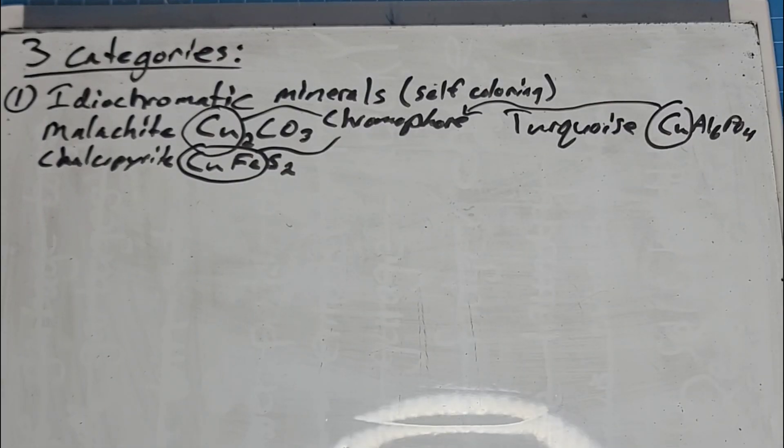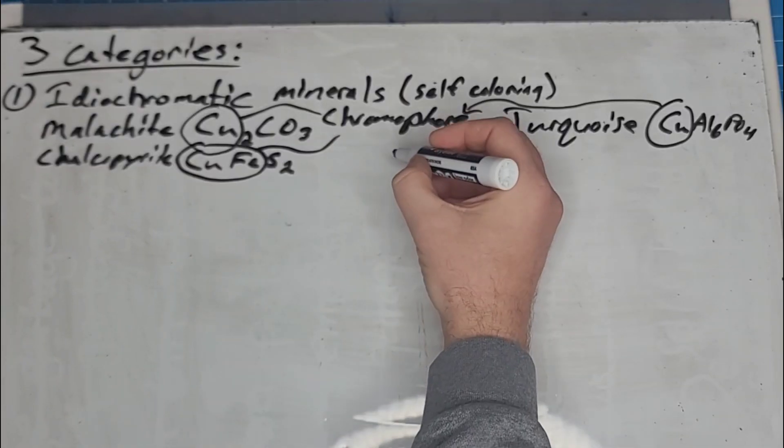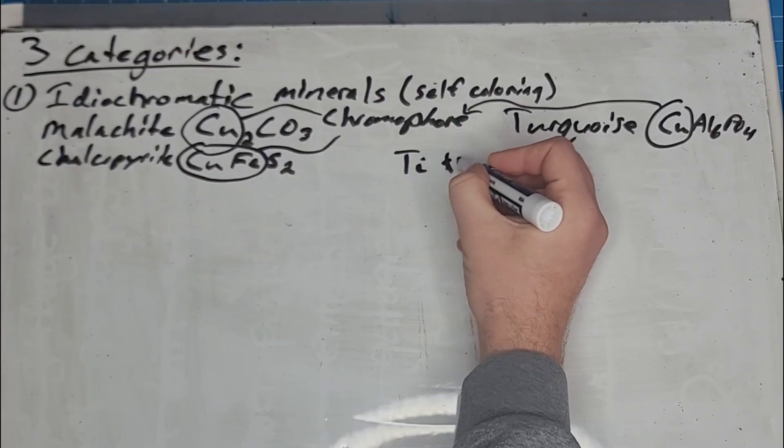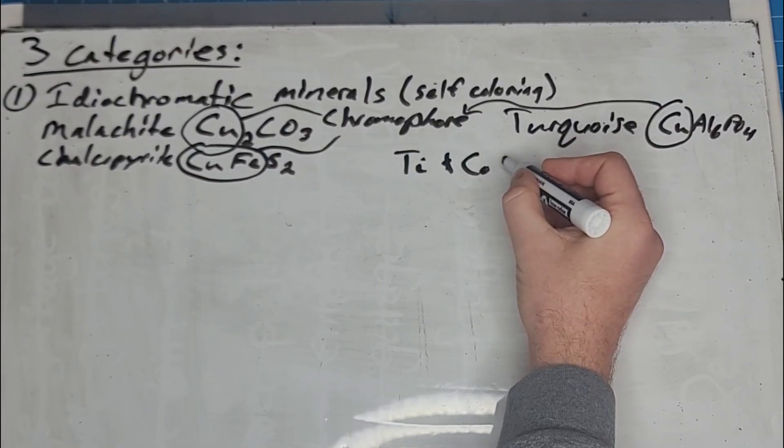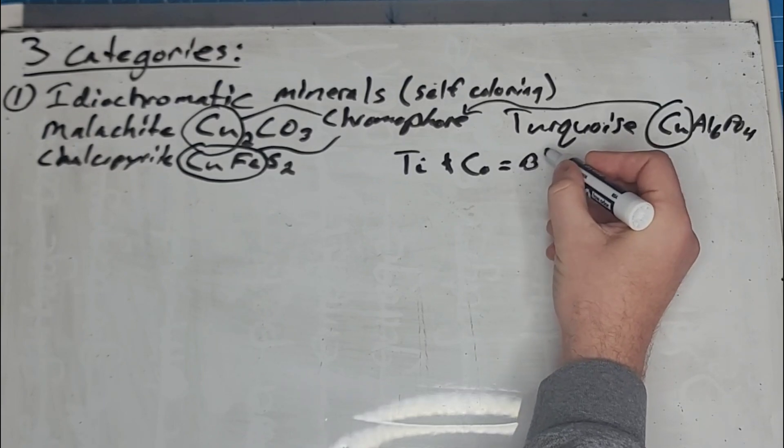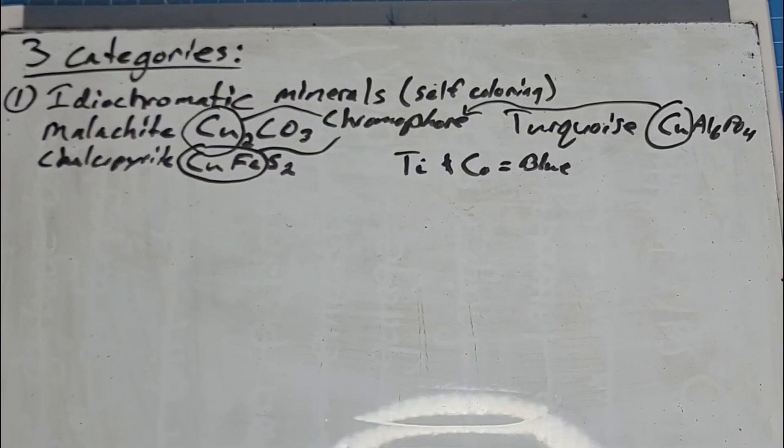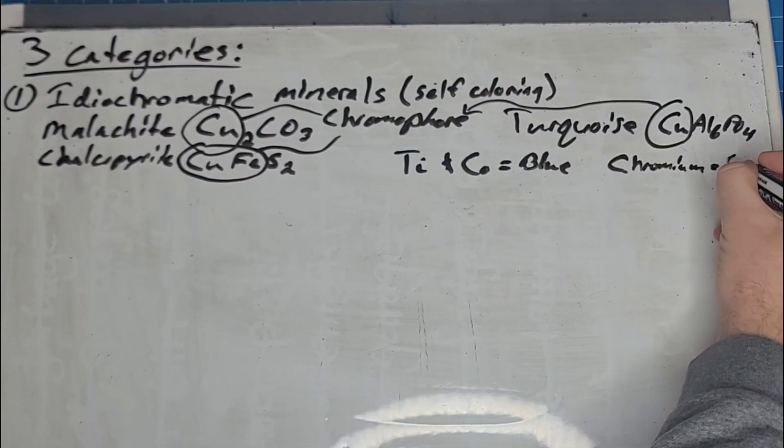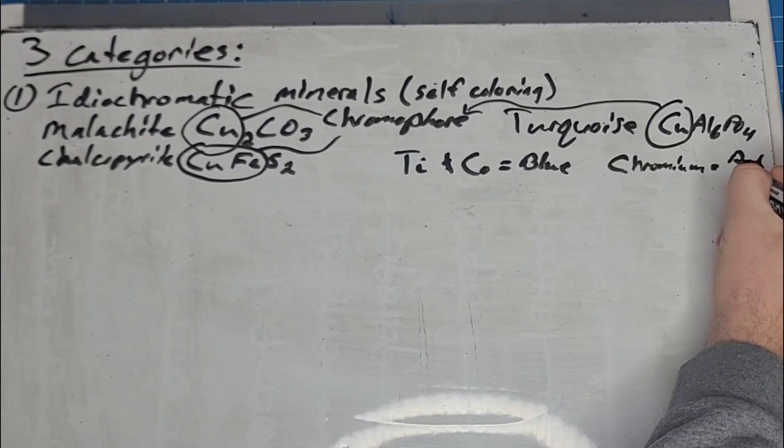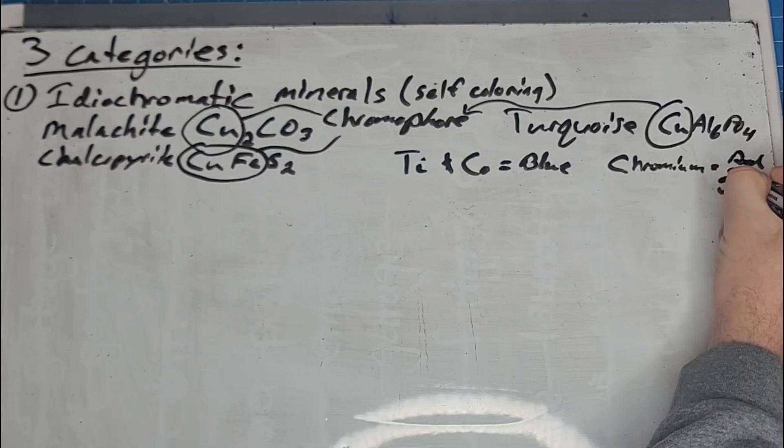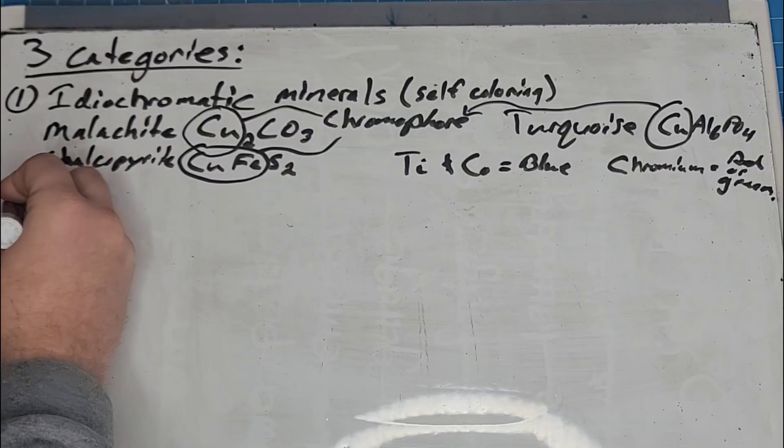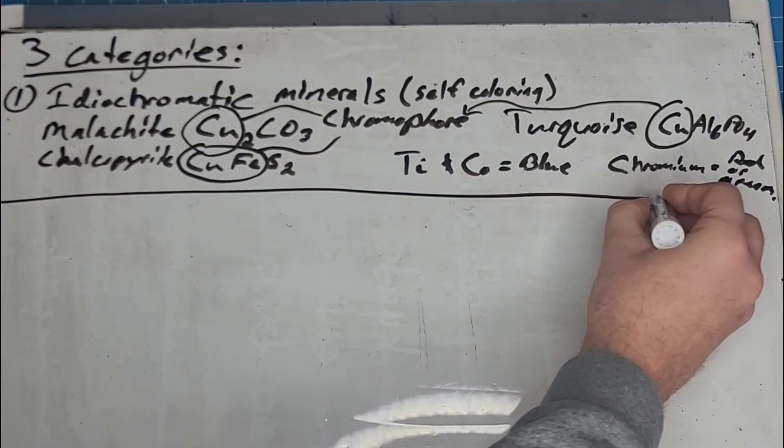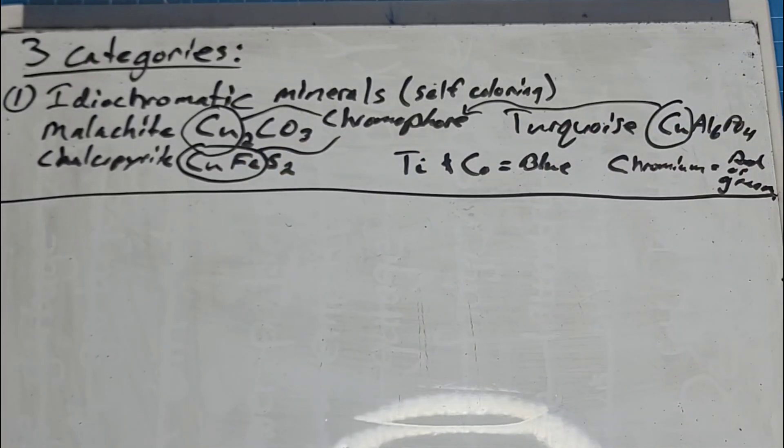Now, other chromophores in idiochromatic minerals are, for example, titanium and cobalt. Those usually translate to blue color minerals. And we also have chromium, which usually translates to red or green. So that's our first category of minerals and how they get their color. Self-coloring. Idiochromatic.